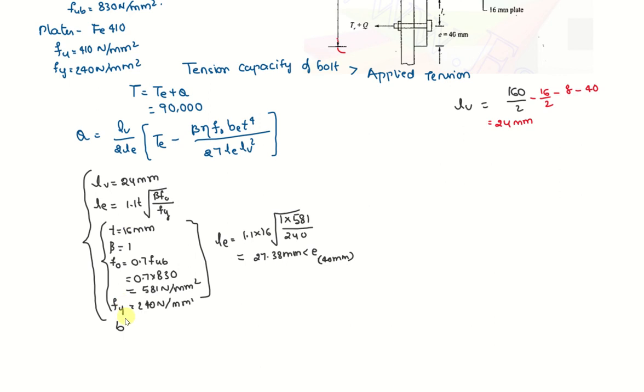So we can proceed with the value 27.38. Le we got and we need to. So beta already we have written 1. Eta 1.5 that is given in the code book directly. F0 is the proof stress we have written here 581. Be is the width of the plate. That is 140 mm. T is the thickness of the plate 16 mm. So we have all remaining parameters. So let us try to substitute in this.